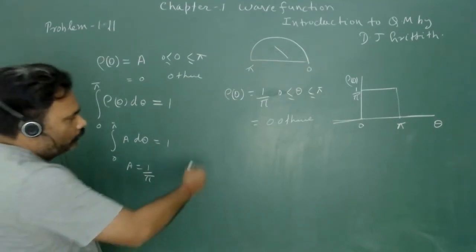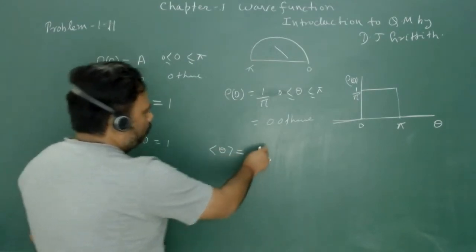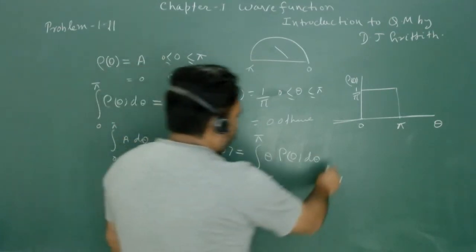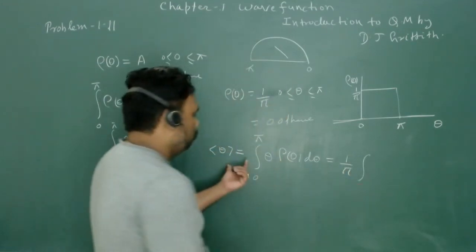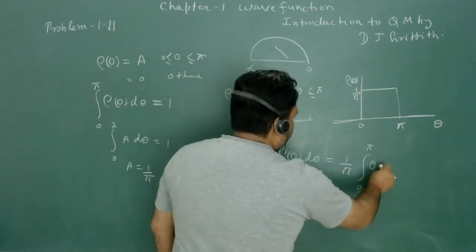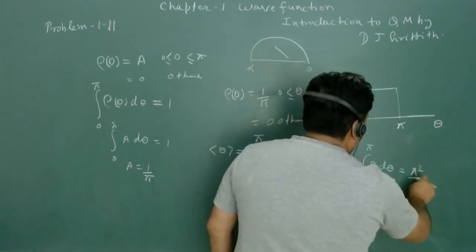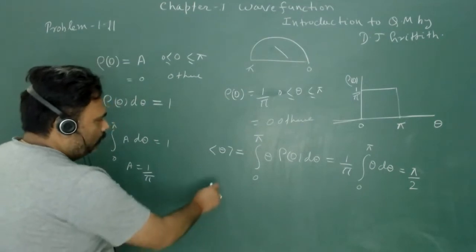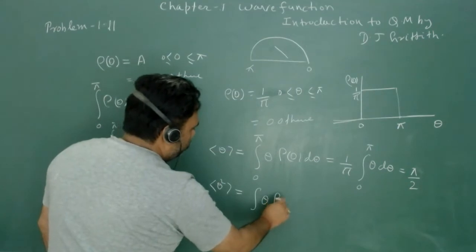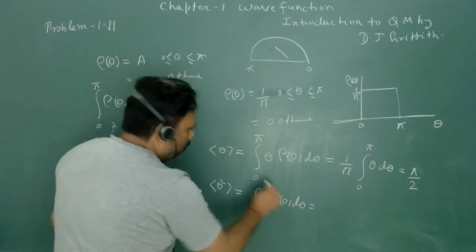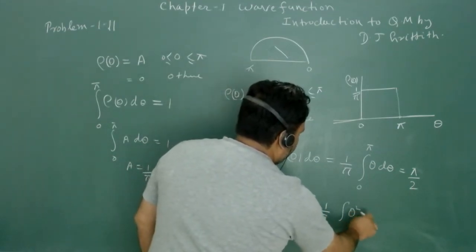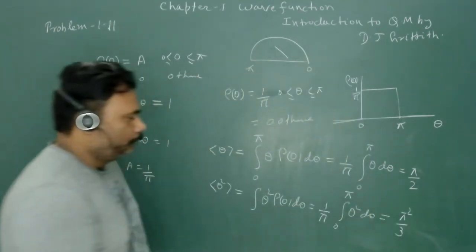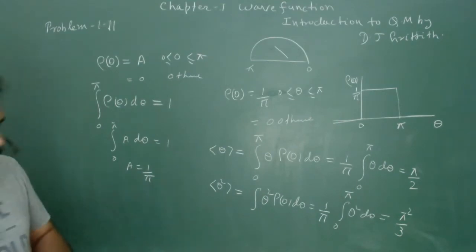To calculate the standard deviation, we first find the average value of theta: ⟨θ⟩ = ∫ θ ρ(θ) dθ from 0 to π = (1/π) ∫₀^π θ dθ = π/2. Similarly, ⟨θ²⟩ = (1/π) ∫₀^π θ² dθ = π²/3.